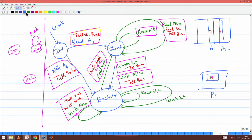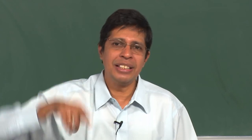But if somebody is writing into that location while I am in shared state, then I go invalid. I am in shared state — whatever value I am storing is what is there in memory; that is what we define by shared state. So I need not go and update memory; I just go to invalid. Now he has taken control, so whatever I have is now invalid.